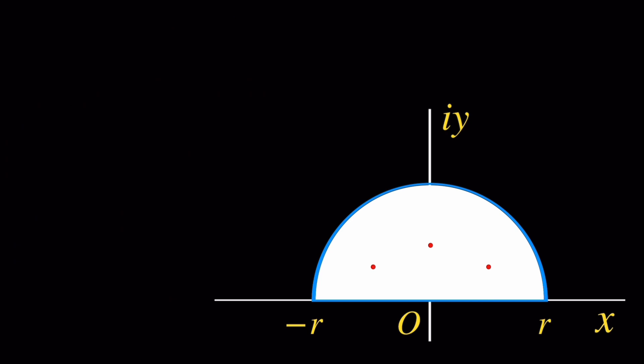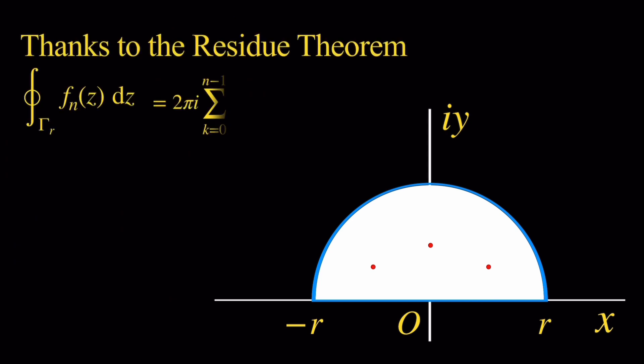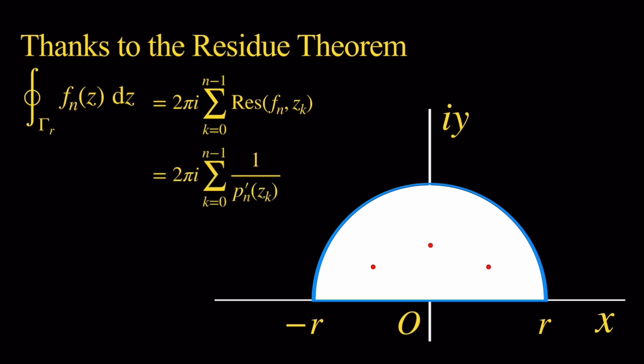According to the residue theorem, the integral of f of z dz along gamma r is equal to 2 pi i times the sum of all the residues of f, only at poles contained inside the region. Because all these poles are simple poles, the residue of f sub n at z sub k is equal to 1 over the derivative of p sub n at z sub k. We compute the derivative: it's going to be 2n times z to the 2n minus 1.